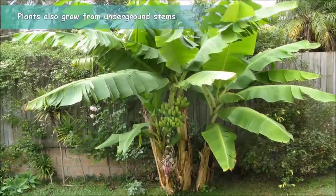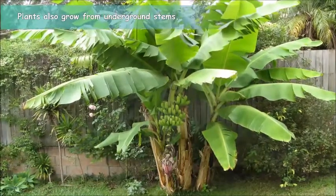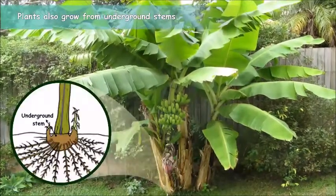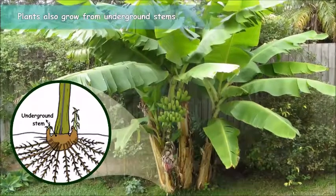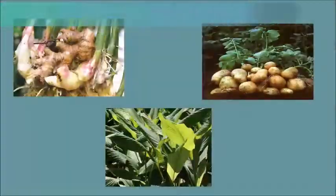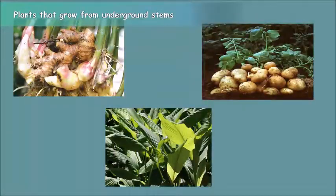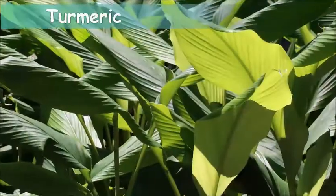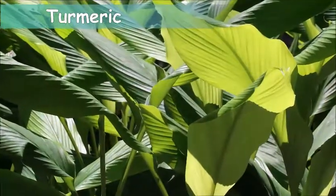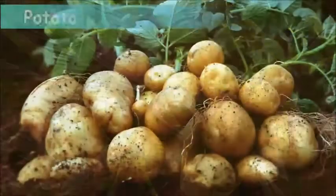There are some other plants like banana that grow from their underground stems. Other examples of such plants include ginger, turmeric, and potato.